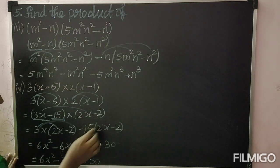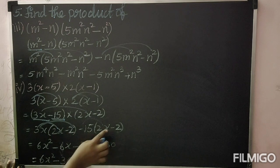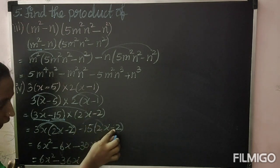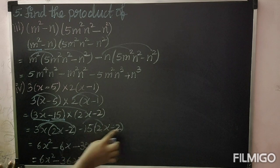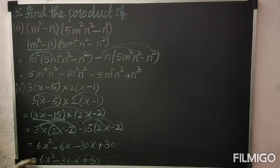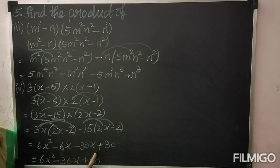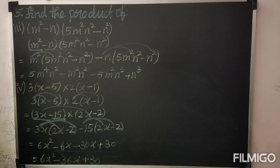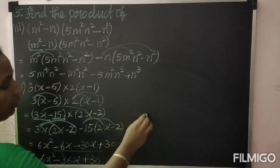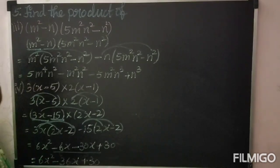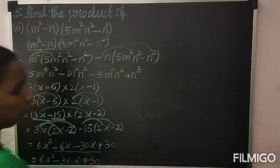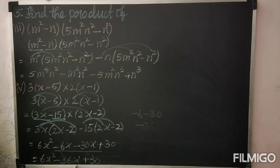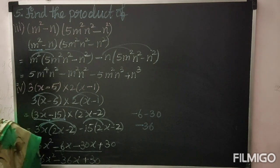Multiplying: 3x into 2x — 3 twos are 6, x into x is x² — gives 6x²; minus 3 twos are 6x. Next minus 15 into 2 gives minus 30x; minus into minus gives plus, 15 twos are 30. So we got 6x² − 6x − 30x + 30. Observe: minus 6x and minus 30x are like terms, add them: minus 36. The answer is 6x² − 36x + 30.